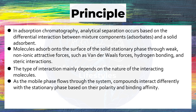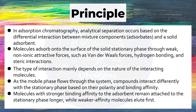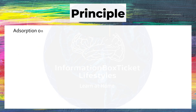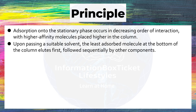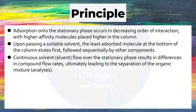As the mobile phase flows through the system, compounds interact differently with the stationary phase based on their polarity and binding affinity. Molecules with stronger binding affinity to the adsorbent remain attached to the stationary phase longer, while weaker affinity molecules elute first. Adsorption onto the stationary phase occurs in decreasing order of interaction, with higher affinity molecules placed higher in the column. Upon passing a suitable solvent, the least adsorbed molecule at the bottom of the column elutes first, followed sequentially by other components. Continuous eluent flow over the stationary phase results in differences in compound flow rates, ultimately leading to the separation of the organic mixture analytes.